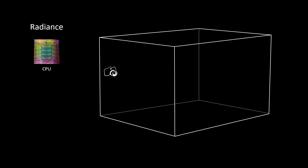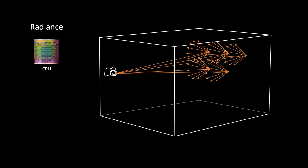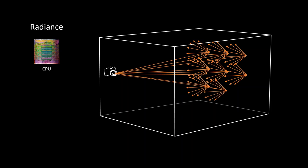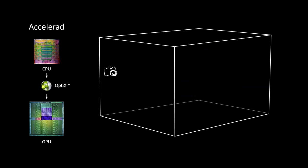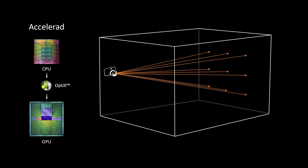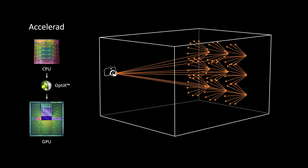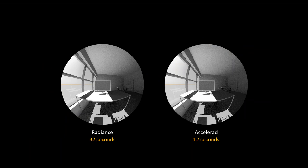In Radiance, this work is done serially on the CPU—one ray at a time, completing the diffuse calculation before proceeding to the next ray. In Accelerad, I parallelized this on the GPU using Nvidia's OptiX ray tracing engine, so all primary rays are sent out simultaneously, each on its own thread, and diffuse calculations are also done in parallel. Preliminary results show the Radiance simulation took 92 seconds while Accelerad took 12 seconds, with a difference in mean luminance of less than 1%.